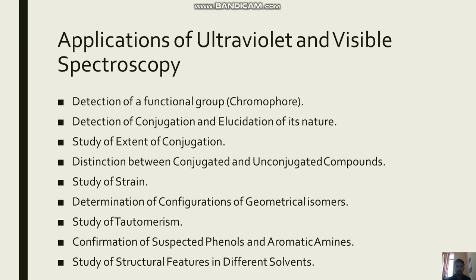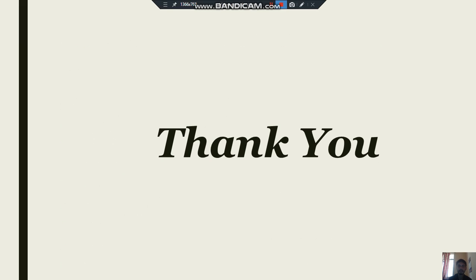Some applications of UV-visible spectroscopy include: detection of functional groups like chromophores, detection of conjugation and elucidation of its nature, study of the extent of conjugation, distinction between conjugated and unconjugated compounds, study of strain, determination of configuration of geometrical isomers, study of tautomerism, confirmation of suspected phenols and aromatic amines, and study of structural changes in different solvents. UV is one of the most used instruments in the pharma industry as well as in academic institutions.